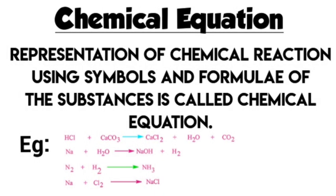Chemical equation: representation of a chemical reaction using symbols and formulae of the substances is called a chemical equation. Examples: HCl + CaCO3 = CaCl2 + H2O + CO2; Na + H2O = NaOH + H2; N2 + H2 = NH3; Na + Cl2 = NaCl.